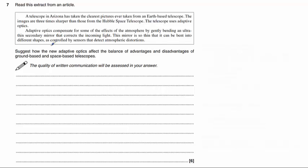In some ways this paragraph here is a bit of a distraction from the main bulk of the question. Remember the question is suggest how the new adaptive optics affect the balance of advantages and disadvantages. You absolutely need to be describing the advantages and disadvantages of ground-based and space-based telescopes, and then towards the end of your answer you can take the opportunity to suggest how the adaptive optics might affect this balance of advantages and disadvantages.